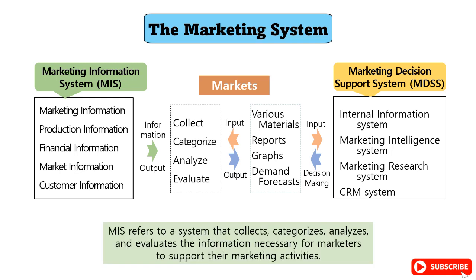A Marketing Information System refers to a system that collects, categorizes, analyzes, and evaluates the information necessary for marketers to support their marketing activities. It consists of marketing information, production information, financial information, market information, and customer information.